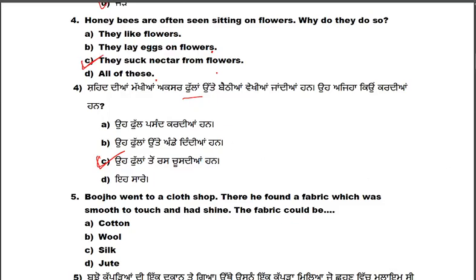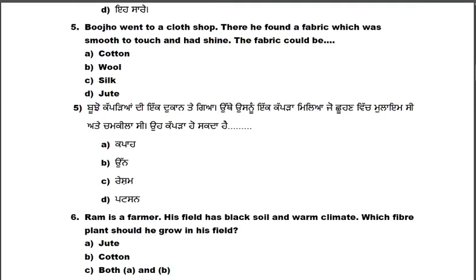Fifth question: Bujo went to a clothes shop. There he found a fabric which was smooth to touch and had shine. The fabric could be cotton, wool, silk, or jute. The fabric that is smooth and shiny is silk.